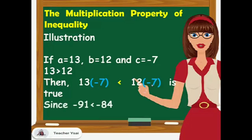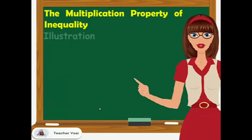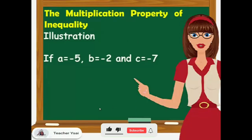Since 13 times negative 7 is negative 91, and 12 times negative 7 is negative 84, and negative 91 is lesser than negative 84.